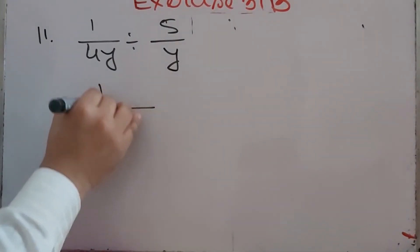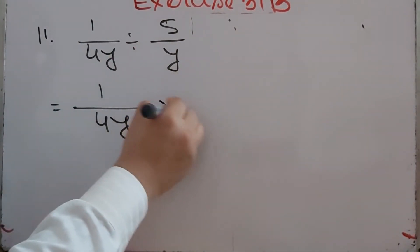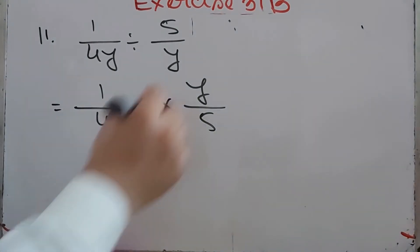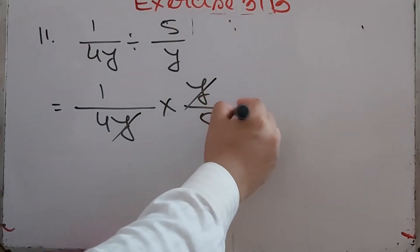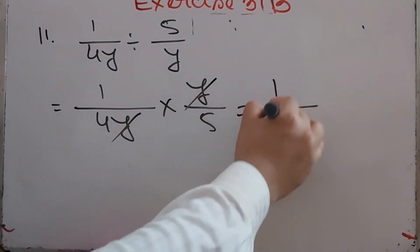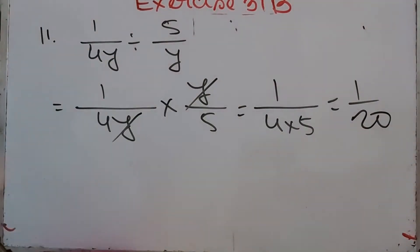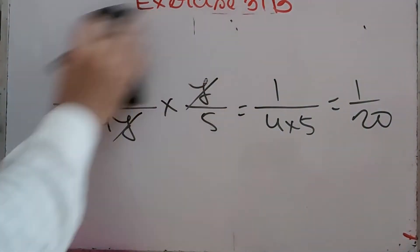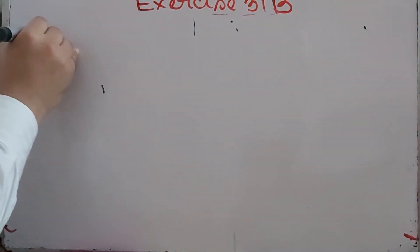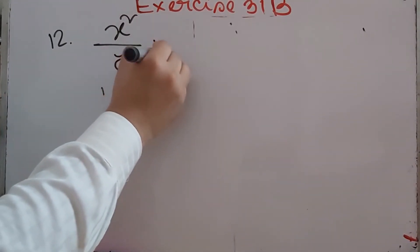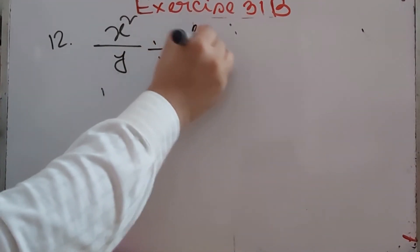The answer is 1/4 × 5 = 1/20. Now number 12: x² by y divided by x by y².